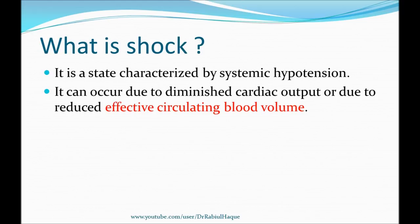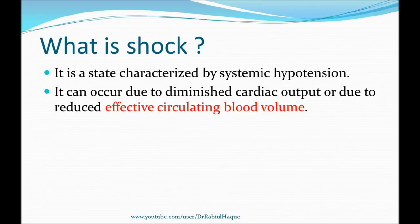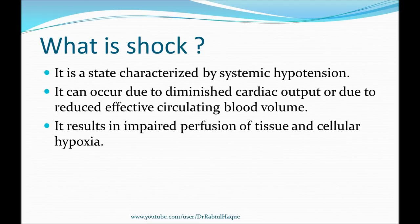What do we mean by effective circulating blood volume? Always remember, effective circulating blood volume is the volume of arterial blood that is effectively perfusing the tissue. For example, if there is peripheral pooling of blood in the peripheral veins, that will reduce the effective circulating blood volume and reduce the amount of arterial blood perfusing tissue, which can also result in shock.